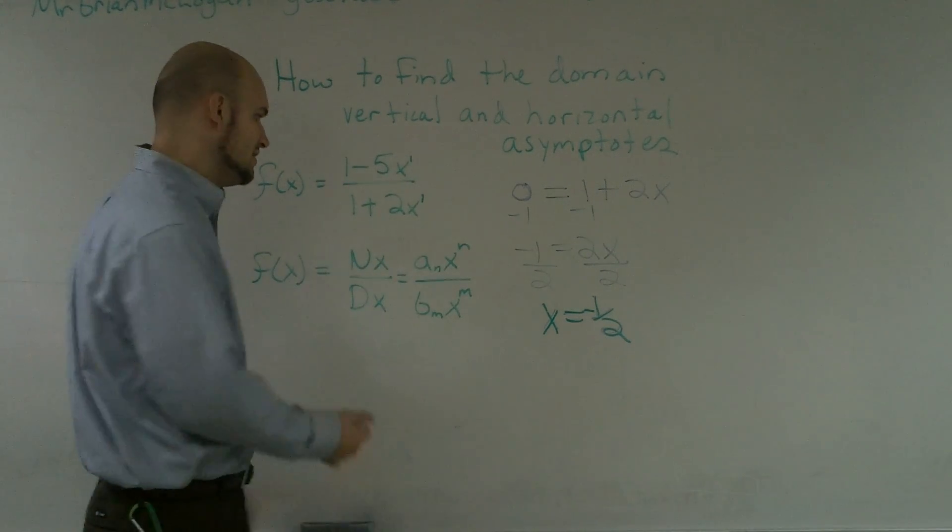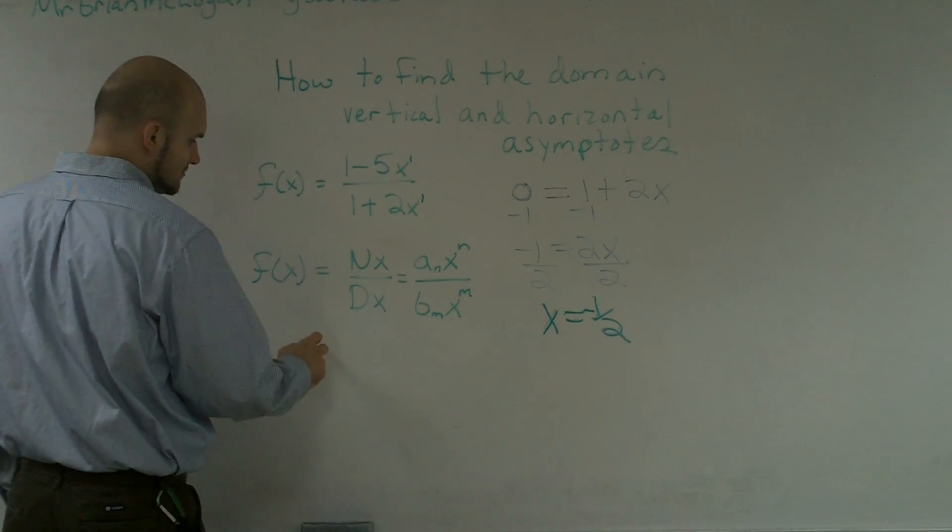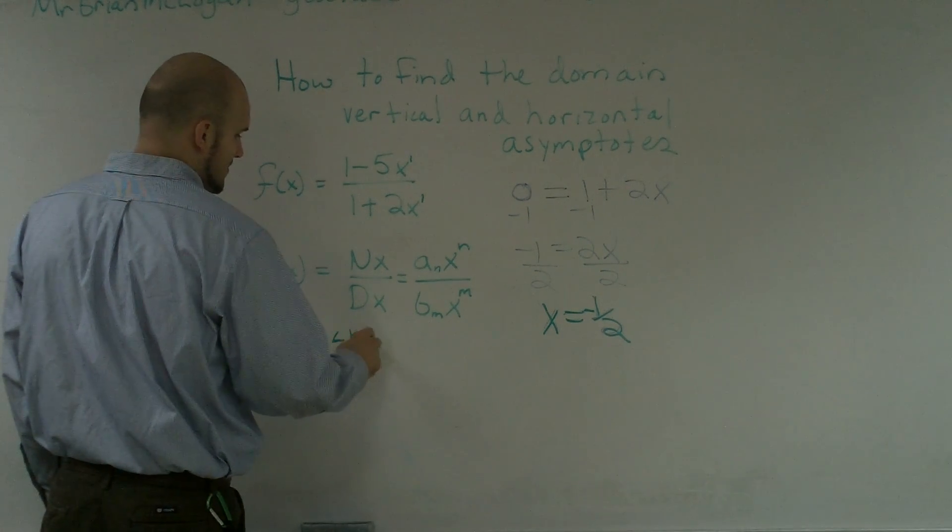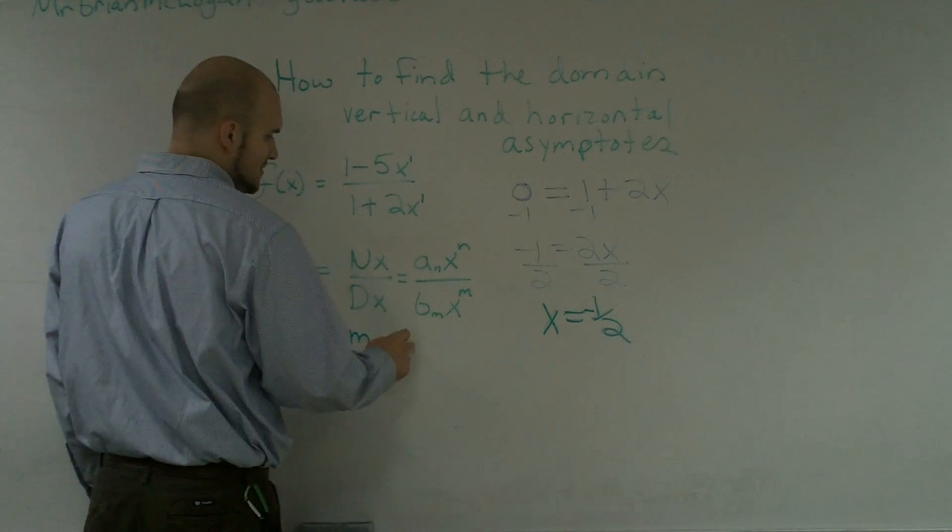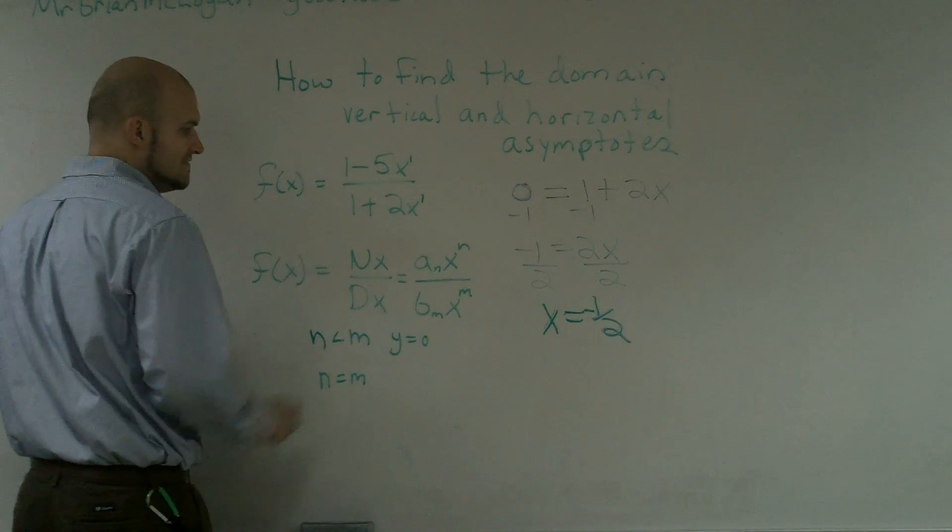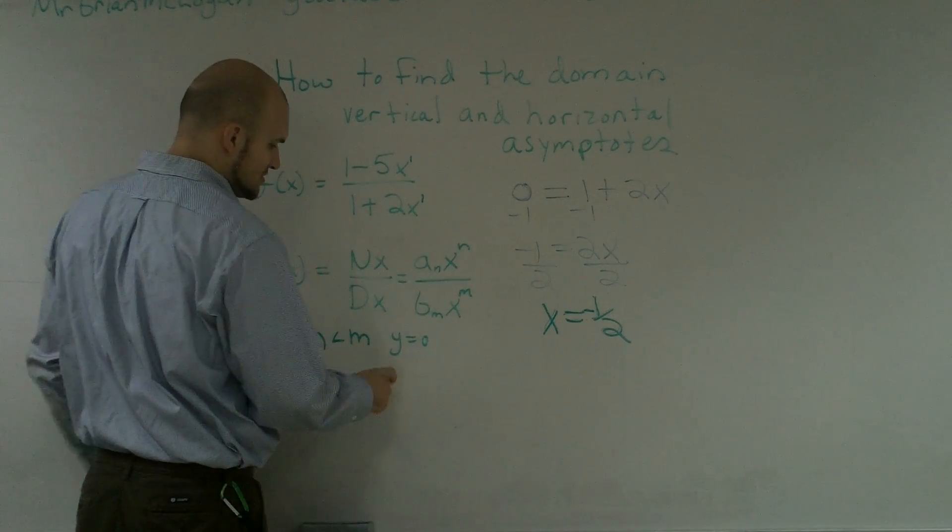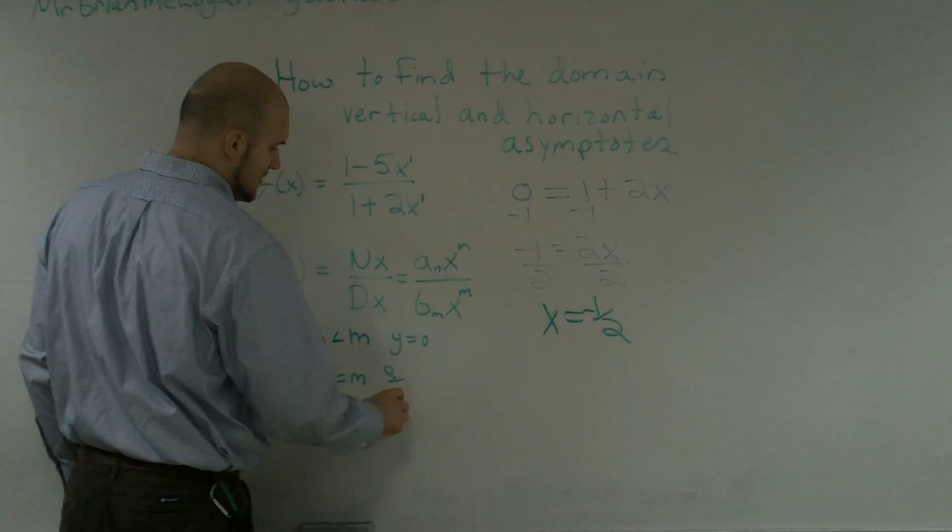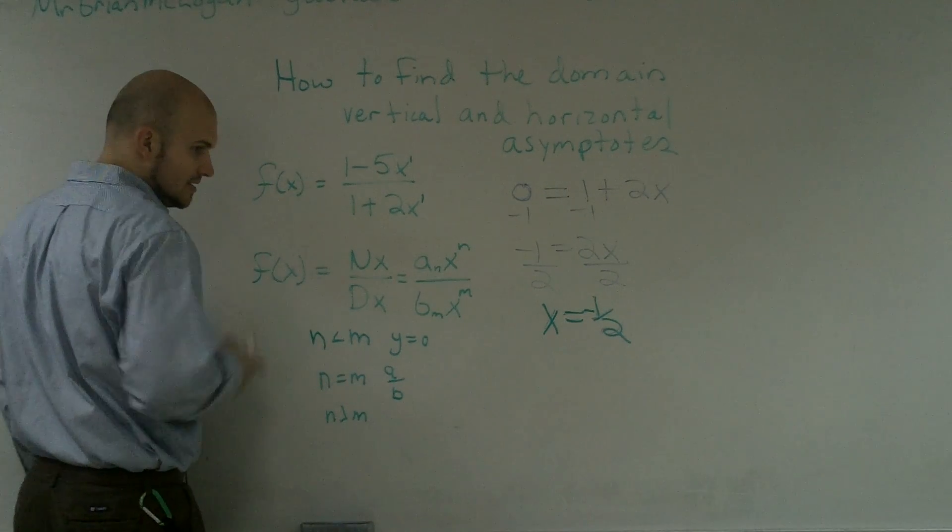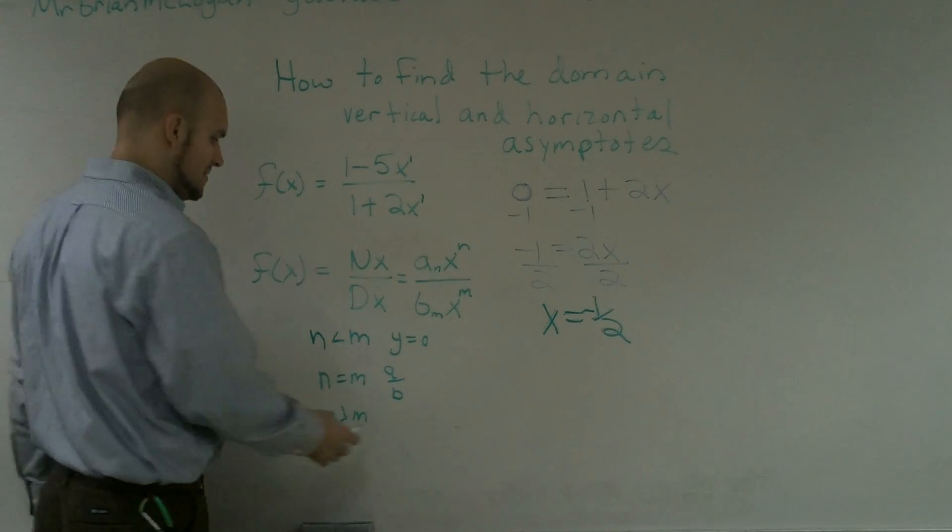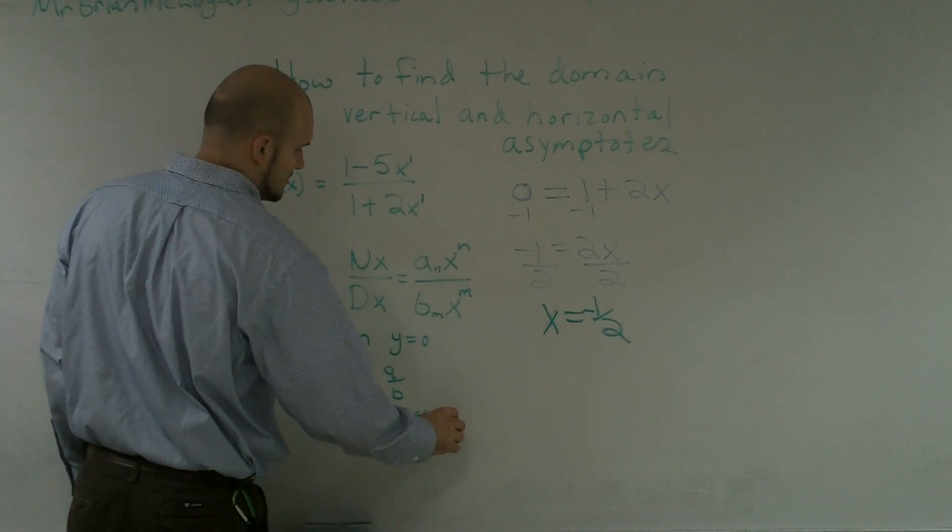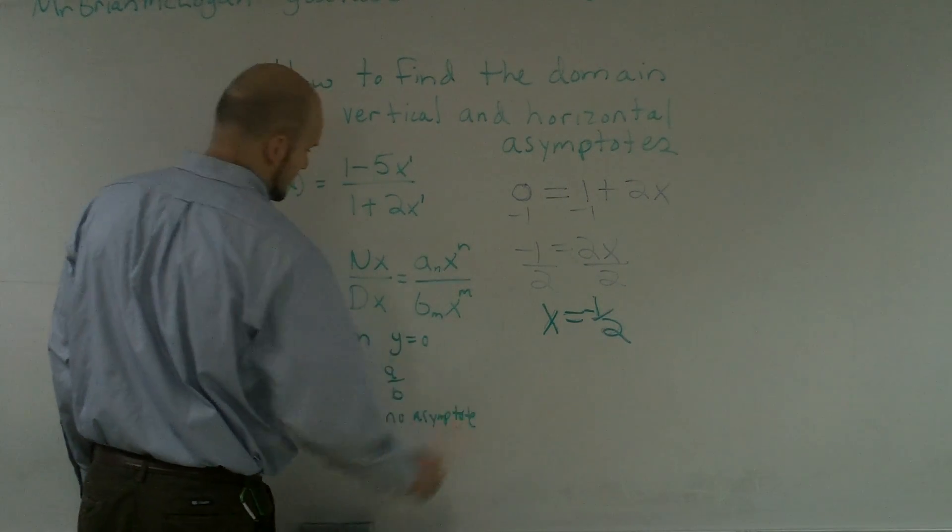There's a different rule for each case. Whenever you have n is less than m, your asymptote is going to be y equals 0. Whenever you have n equals m, your asymptote is going to be a over b. And if you have n is greater than m, then you do not have an asymptote.